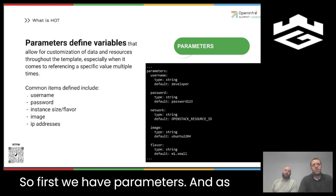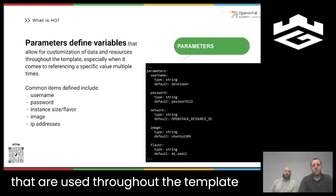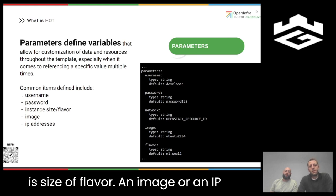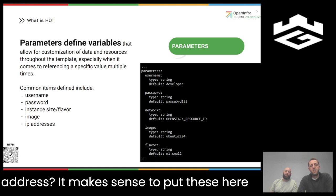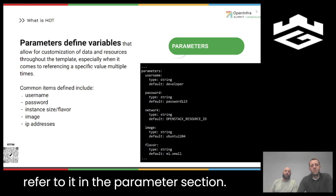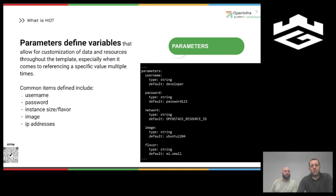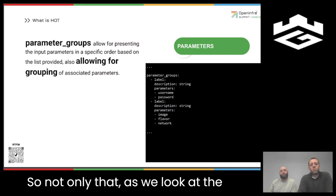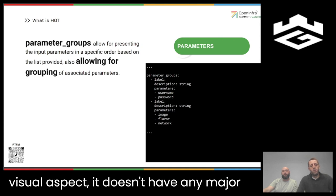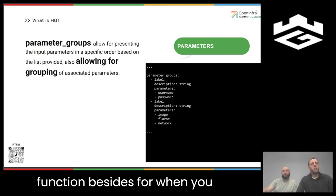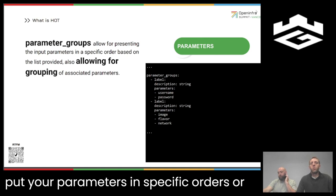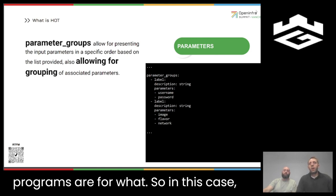Parameters define the variables used throughout the template. Examples would be a username or password, an instance size or flavor, an image, or an IP address. It makes sense to define these here because you refer to them throughout the template. If you have a long complex password, you don't want to retype it over and over — you just refer to it in the parameter section. Inside parameters, you also have what's called parameter groups, which is mainly a visual aspect that allows you to put parameters in specific orders or group them when you deploy via the GUI.